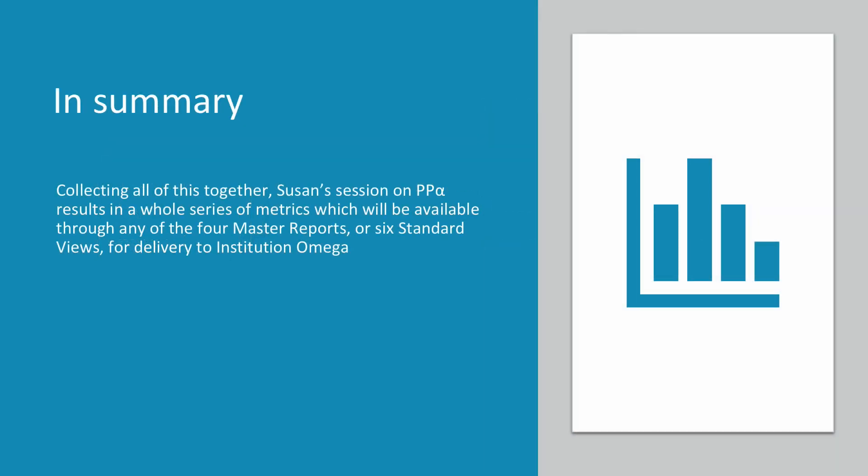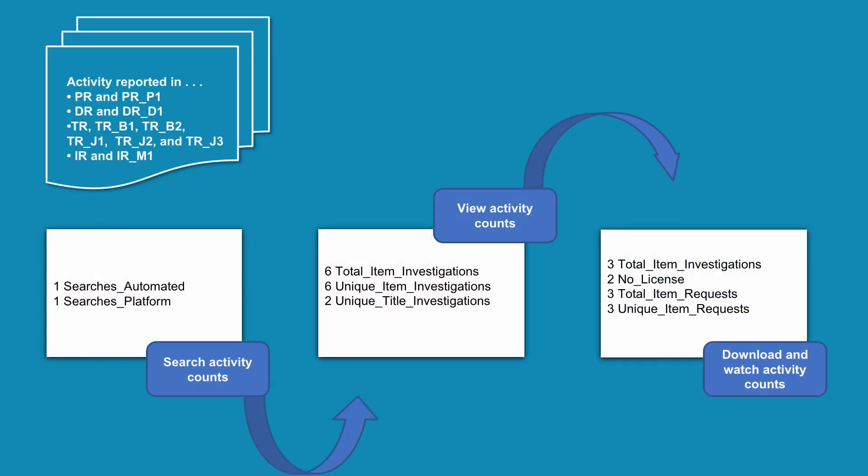Collecting all this together, Susan's session on Alpha results in a whole series of metrics which will be available to her librarian through any of the four master reports or seven standard views. Susan's activity will be reported in the PR (Platform Master Report) and its standard view PR-P1; the DR (Database Master Report) and its standard view DR-D1; the TR (Title Master Report) and its standard views TR-J1, TR-J3, TR-J4, and TR-B2; and the IR (Item Master Report) and its standard views IR-A1 and IR-M1. The librarian at the institution will therefore see search activity counts, view activity counts, download and watch activity counts, and of course, access denied.